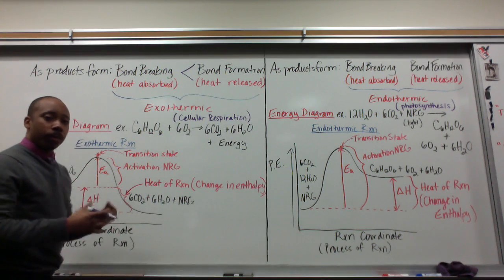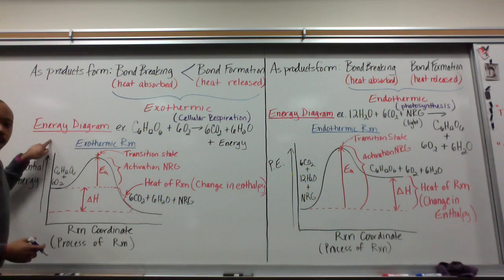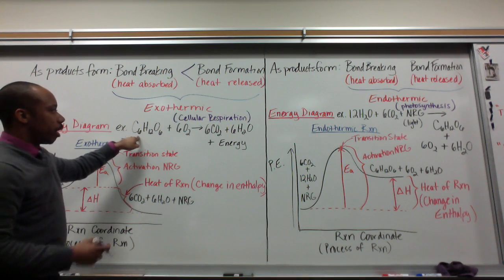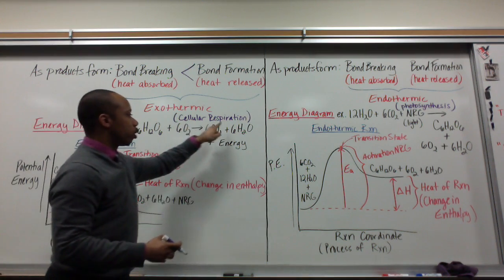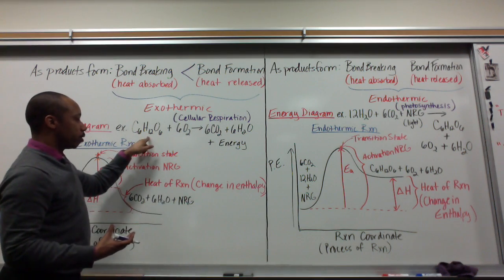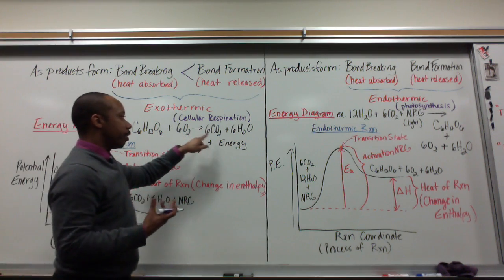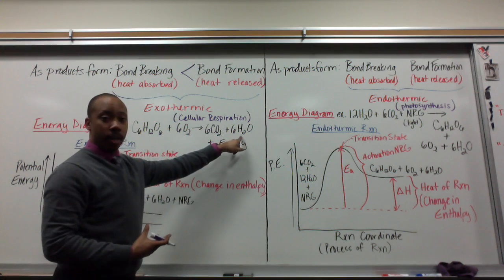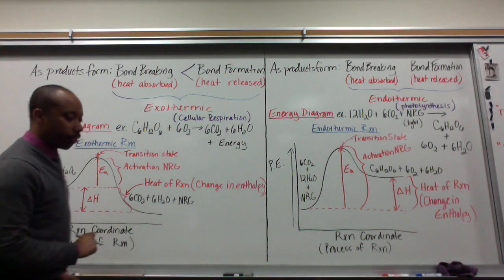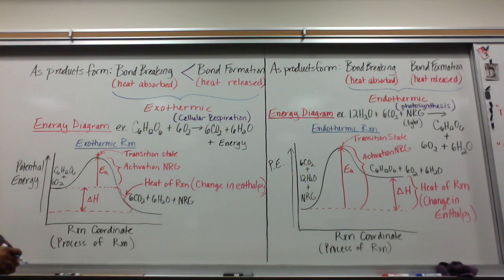We can represent this difference with a diagram called an energy diagram. Here's an example using the process of cellular respiration — that's what we do in order to stay alive. We break down glucose: glucose reacts with the oxygen that we breathe, breaking it down into carbon dioxide that we breathe out, water that we retain in our body, and energy that we use in the form of ATP. This is an exothermic reaction.